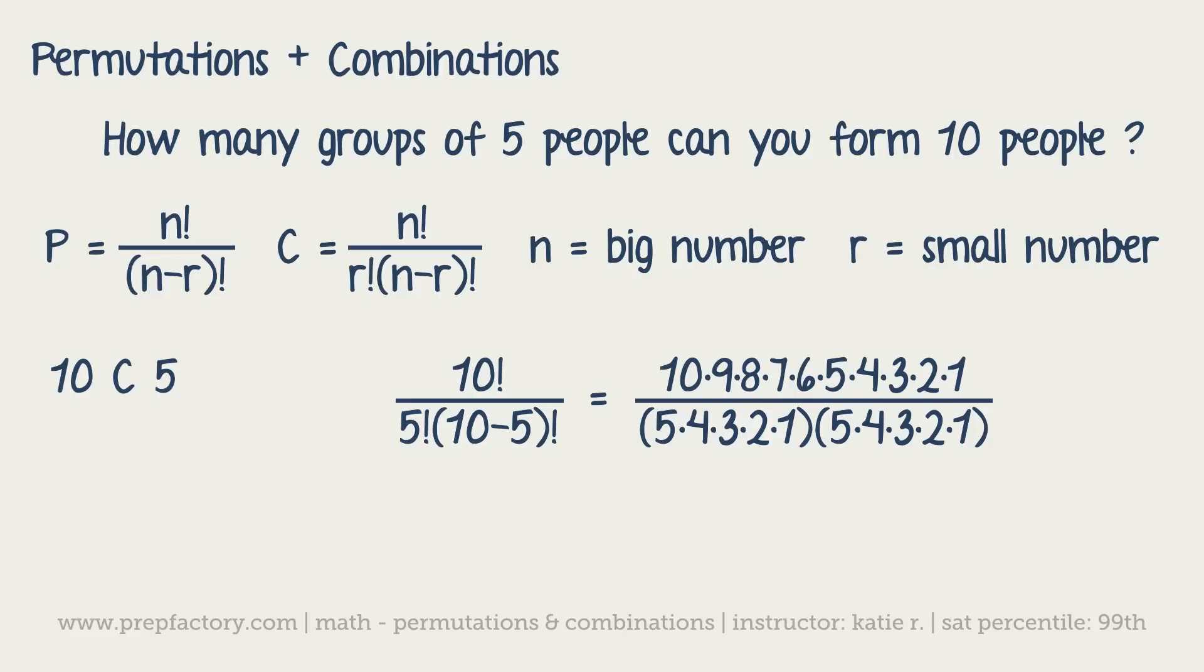And then that's being multiplied by ten minus five, which is just five factorial again, so five times four times three times two times one. The first thing that I would do is I would cross out one set of five factorials because we don't need them, so that makes our life a little bit easier.